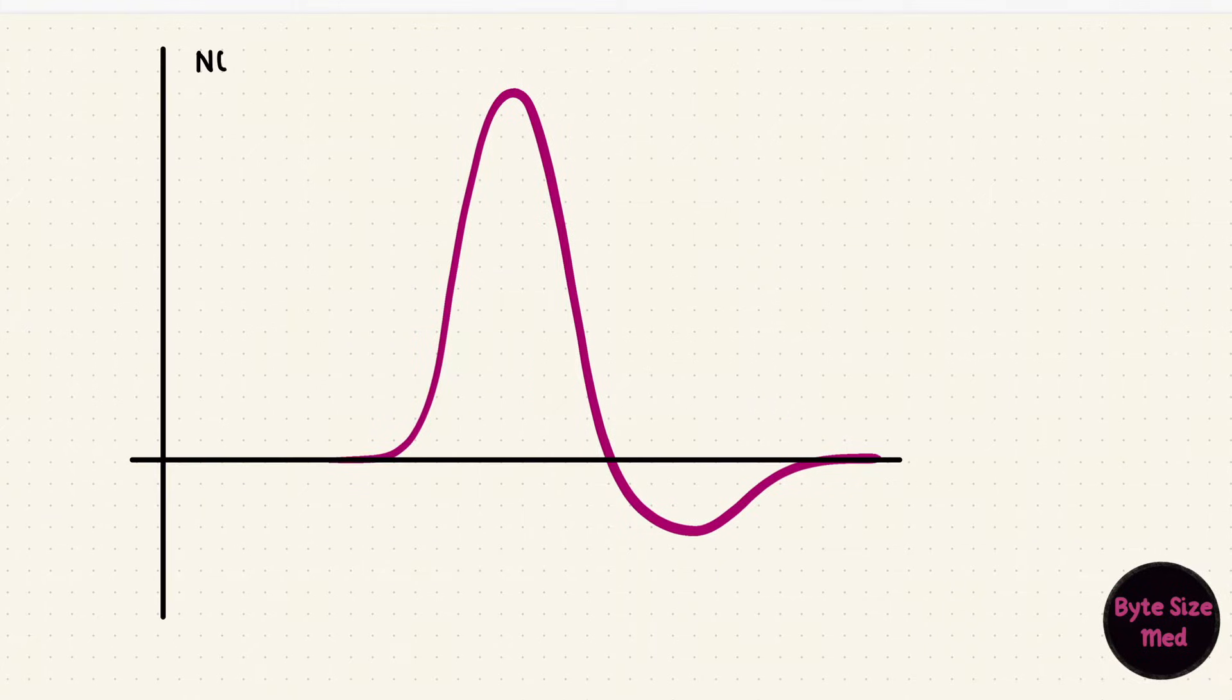This is the action potential in a neuron. It has a negative resting membrane potential of around negative 70 millivolts. When the membrane potential becomes less negative and more positive, that's depolarization.